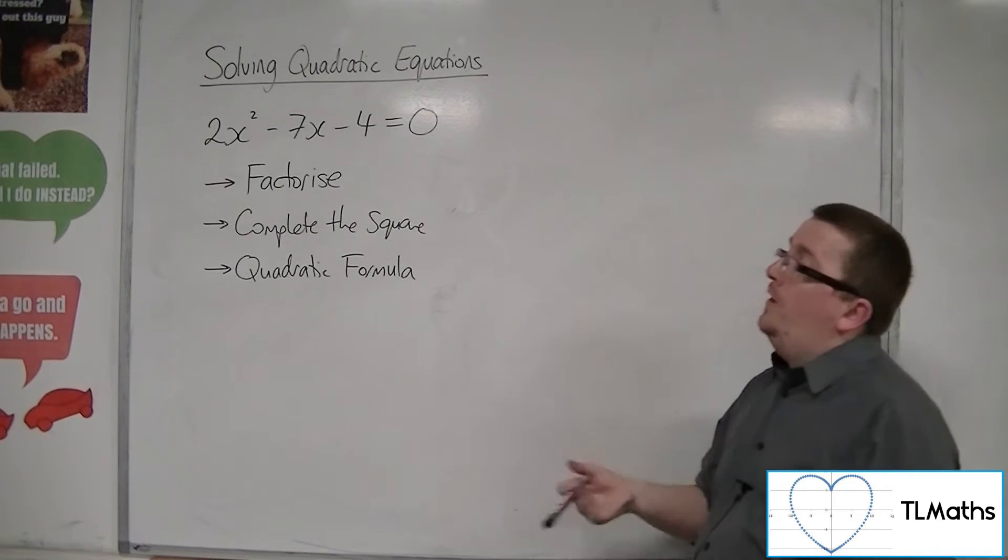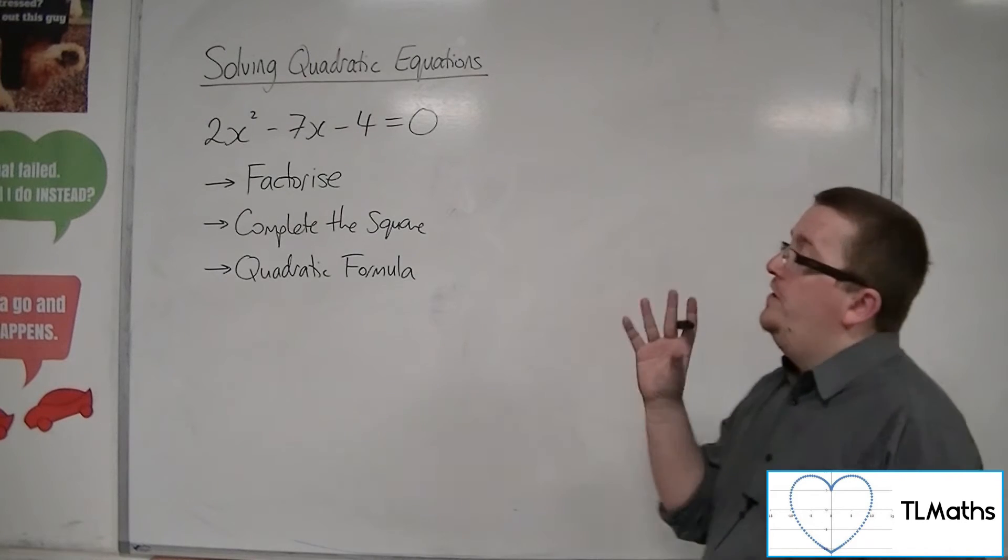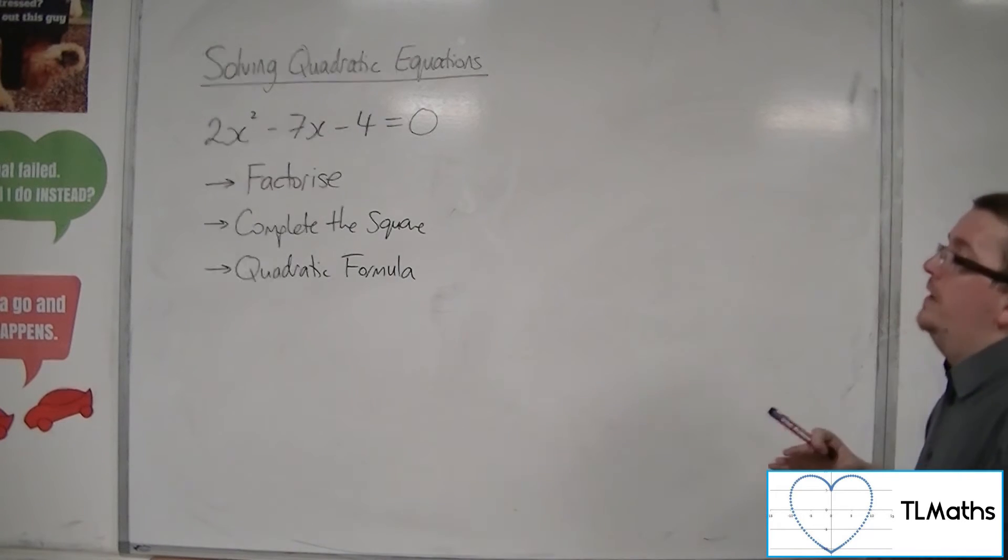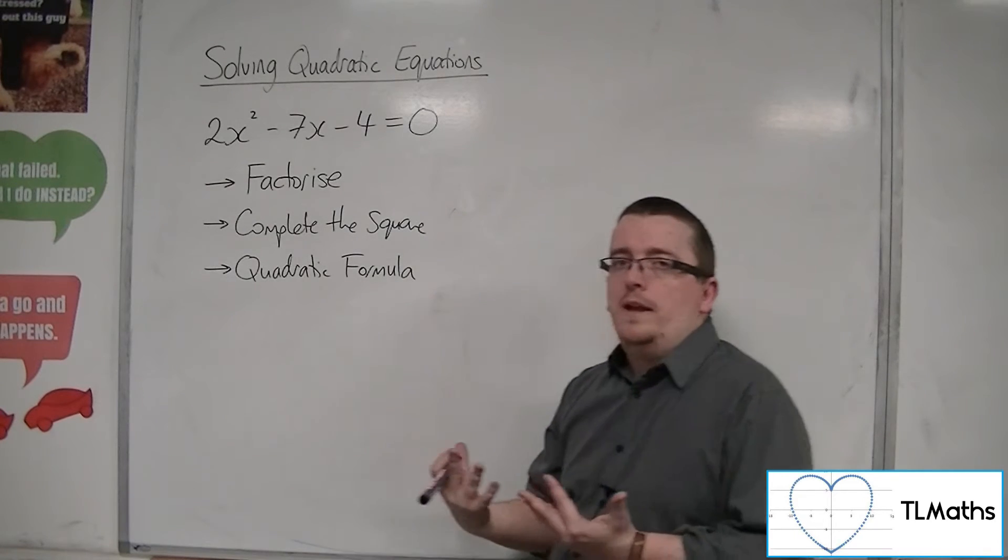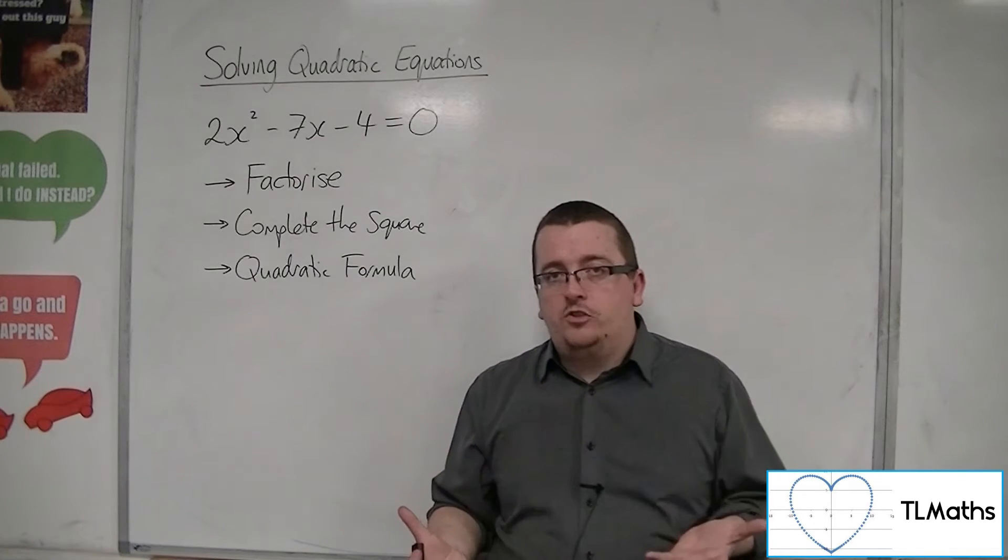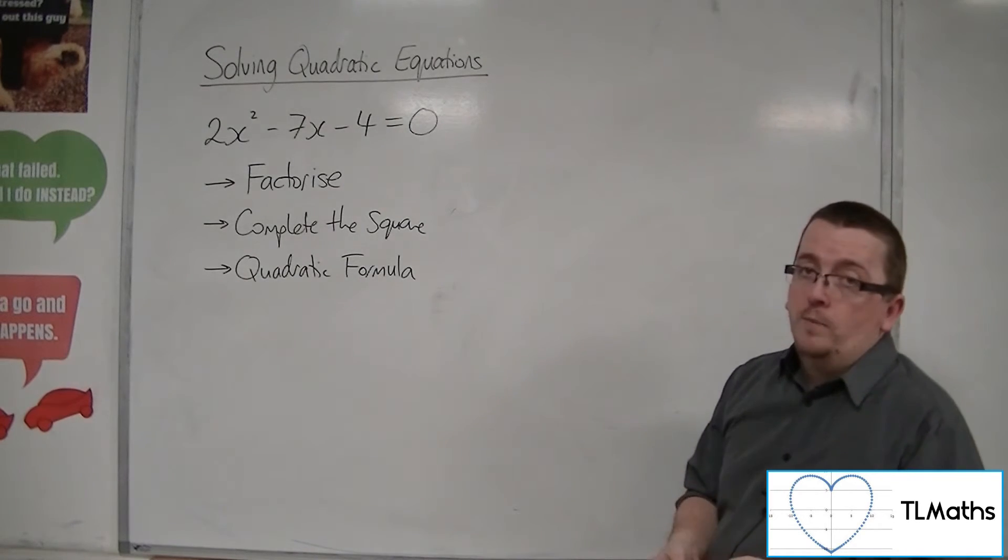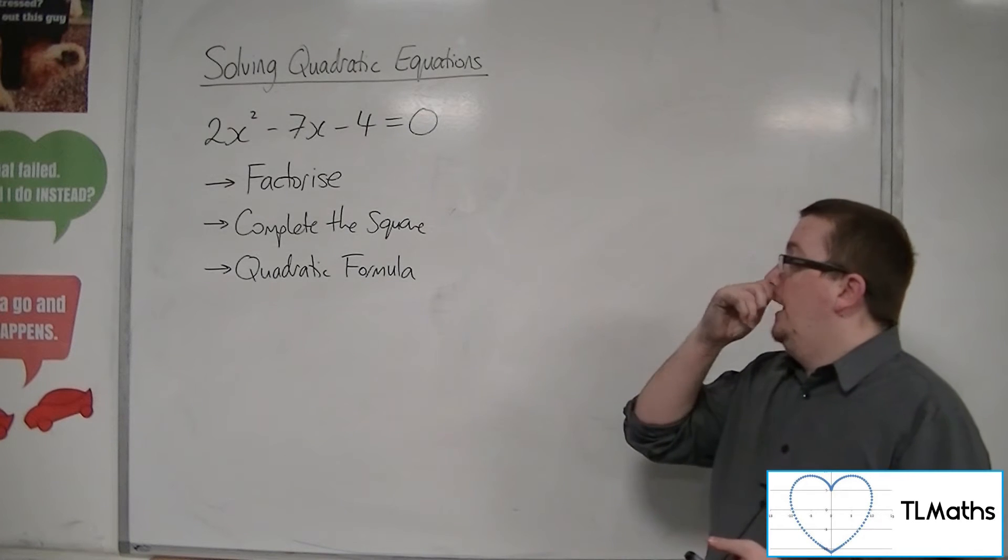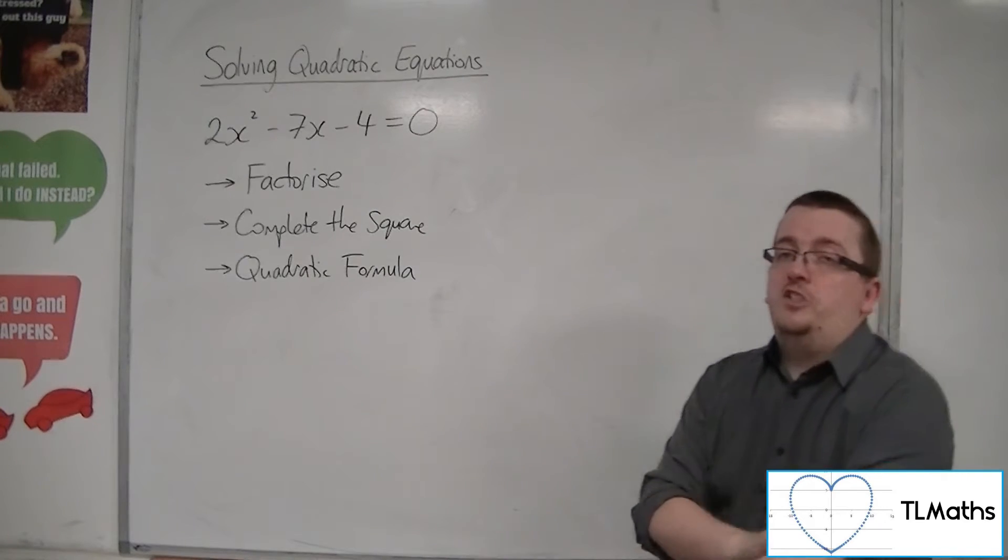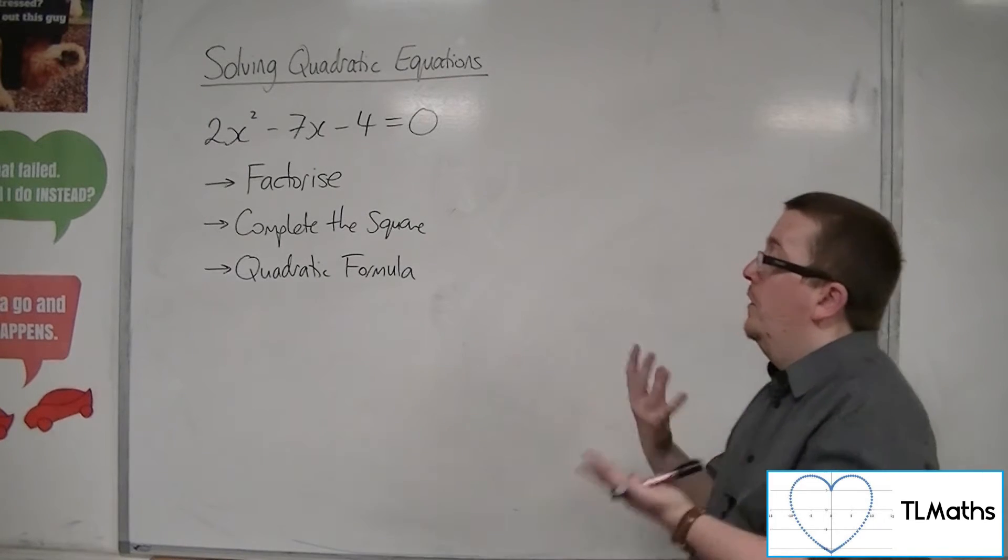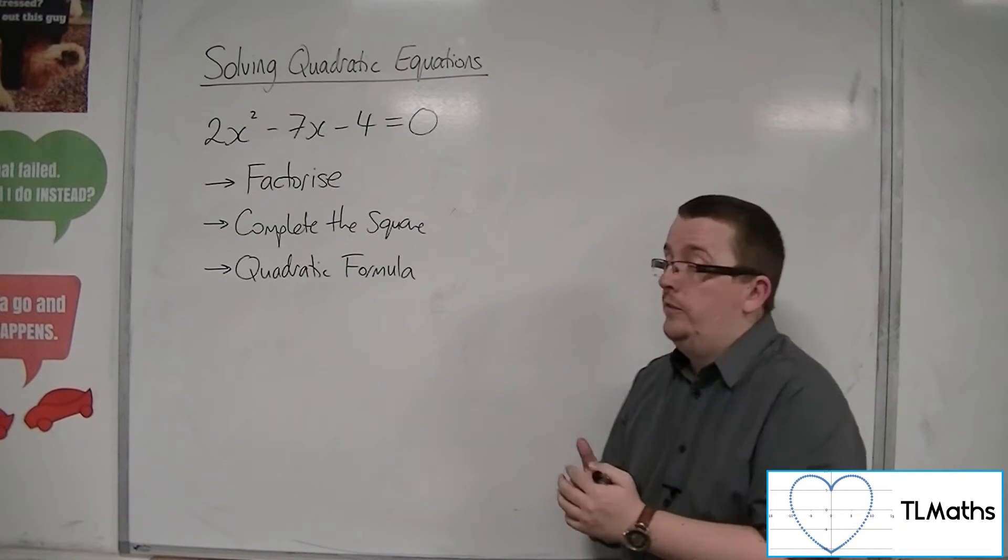So it's always good to try and factorise something first. It's really dependent on the numbers in the question. There are some numbers that, you know, if I had an 8x-squared, I wouldn't particularly want to try and factorise that. I might go straight into using the quadratic formula. It's really down to how much practice you have with this, and it's also down to a bit of personal taste as well.